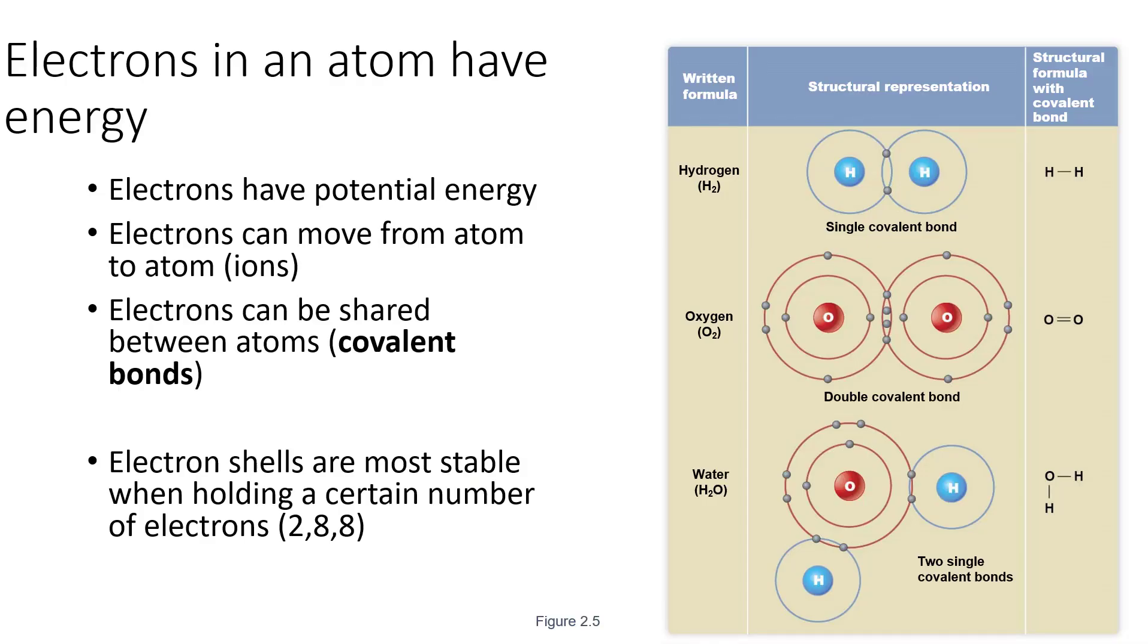Now electrons in an atom also have energy. They have potential energy, and electrons are capable of moving from atom to atom to form ions. We can also form bonds between atoms. So sharing electrons is called a covalent bond, and we see this again in water. It has two single covalent bonds in which both hydrogens share an electron with oxygen, which is sharing two electrons, one with each hydrogen. Why do they do this? It's because each level of electrons, called an electron shell, is most stable when it has a certain number of electrons. The first shell wants two electrons. The second shell wants eight electrons.